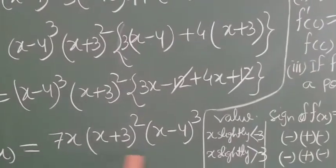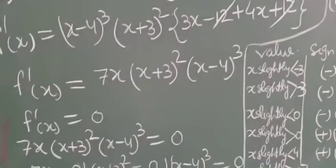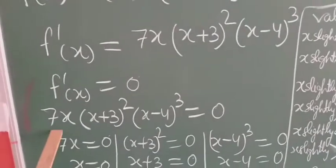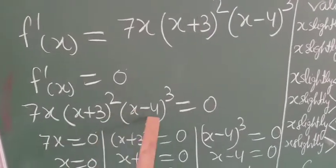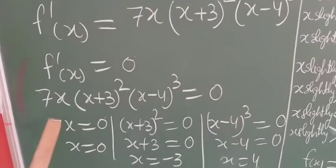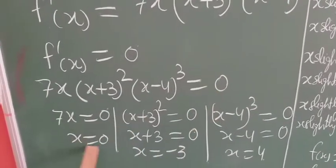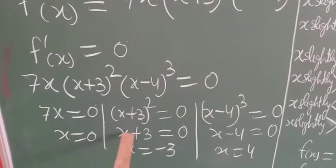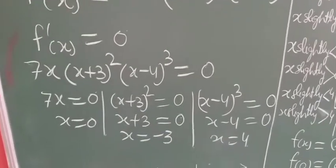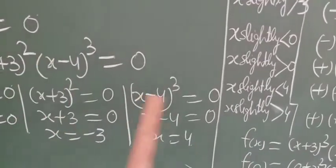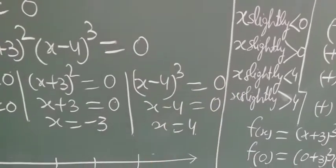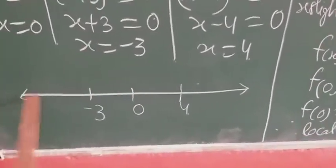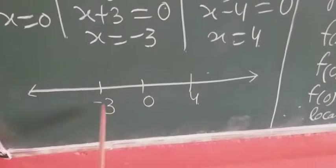Students, we are going to solve this question by the first order derivative test. We put f'(x) = 0 to find the critical points. So 7x · (x+3)² · (x−4)³ = 0. This gives x = 0, then (x+3)² = 0 so x = −3, and (x−4)³ = 0 so x = 4. These three critical points — −3, 0, 4 — are plotted on the number line.